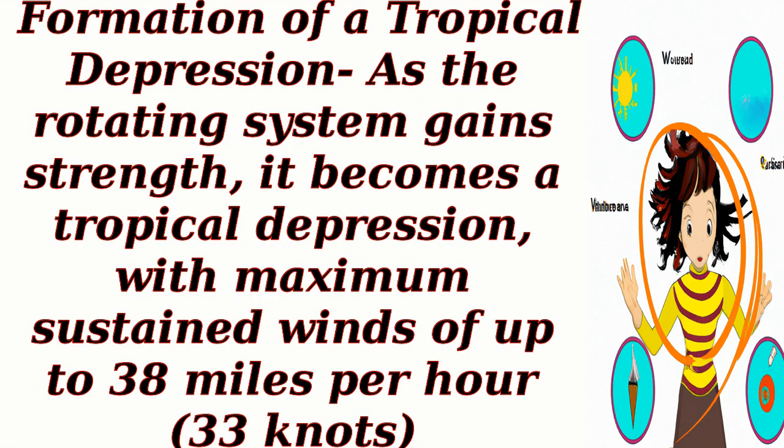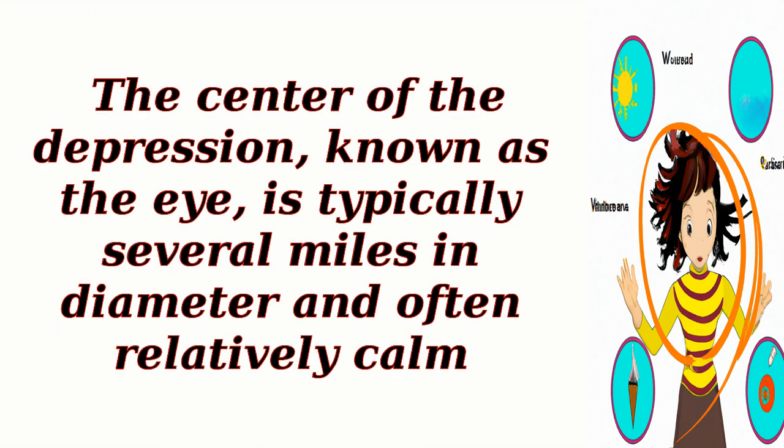Formation of a tropical depression: as the rotating system gains strength, it becomes a tropical depression, with maximum sustained winds of up to 38 miles per hour (33 knots). The center of the depression, known as the eye, is typically several miles in diameter and often relatively calm.